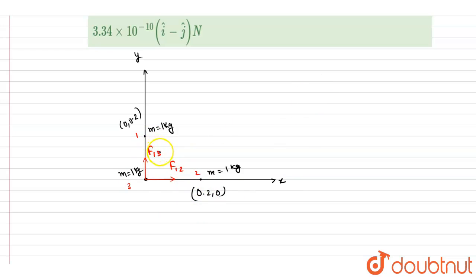So if I write down the magnitude of F₁₂ and F₁₃, they will be equal because if you see the distance between these two is 0.2, and the distance between these two is again 0.2. So if I write it down...